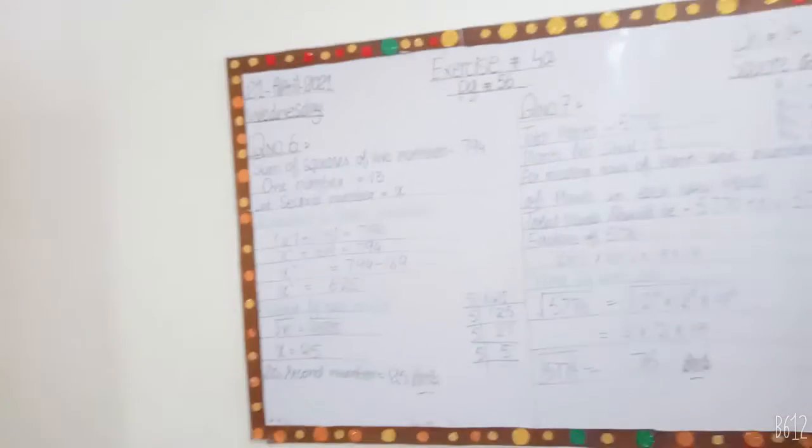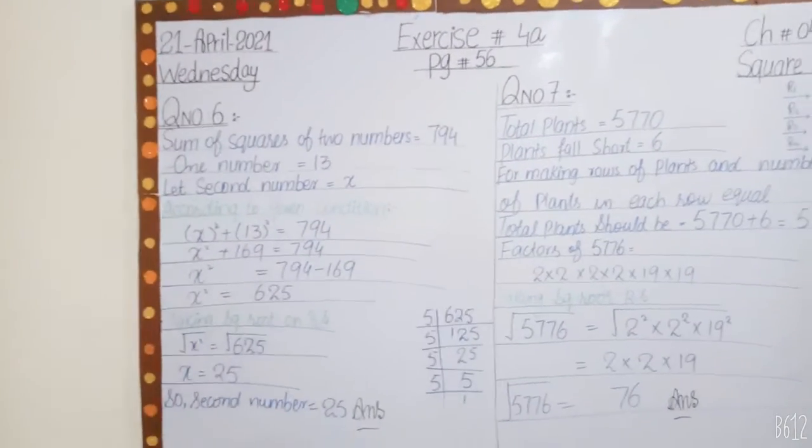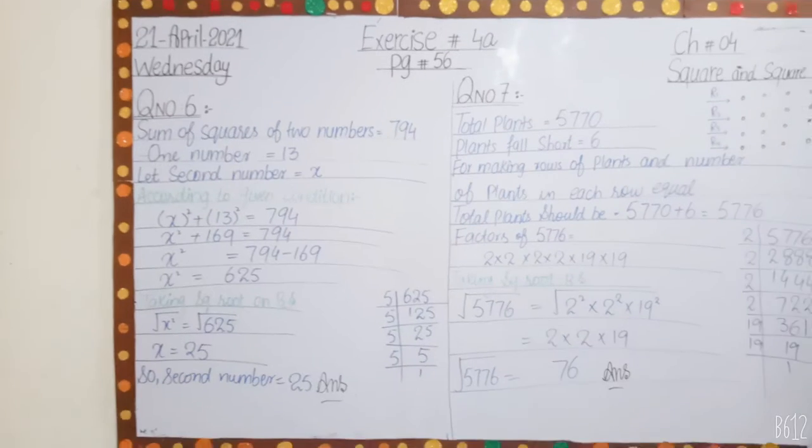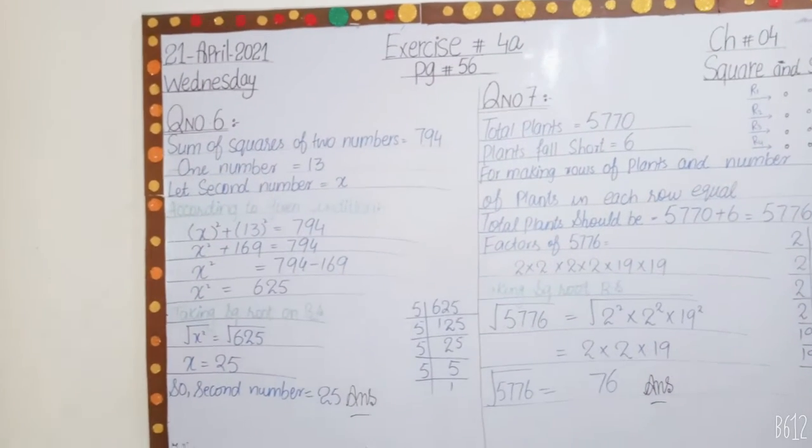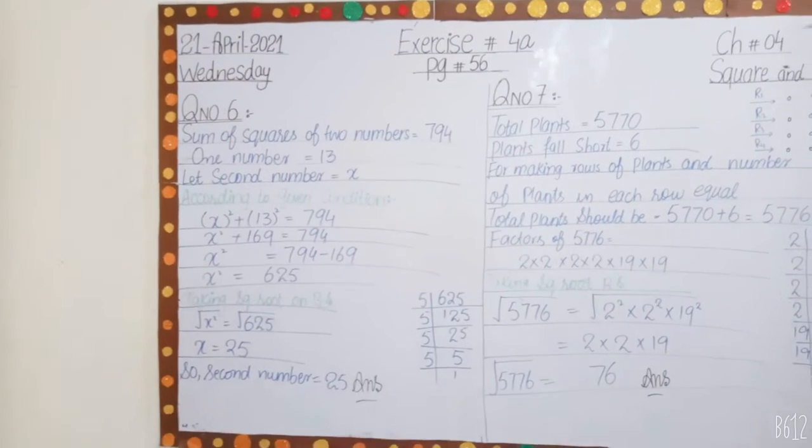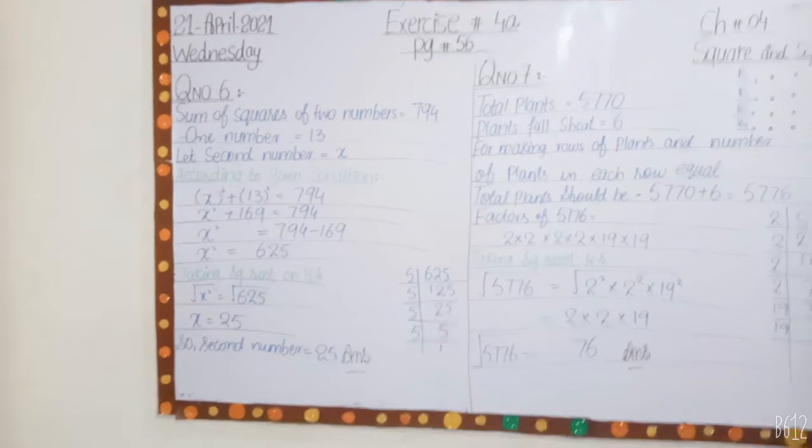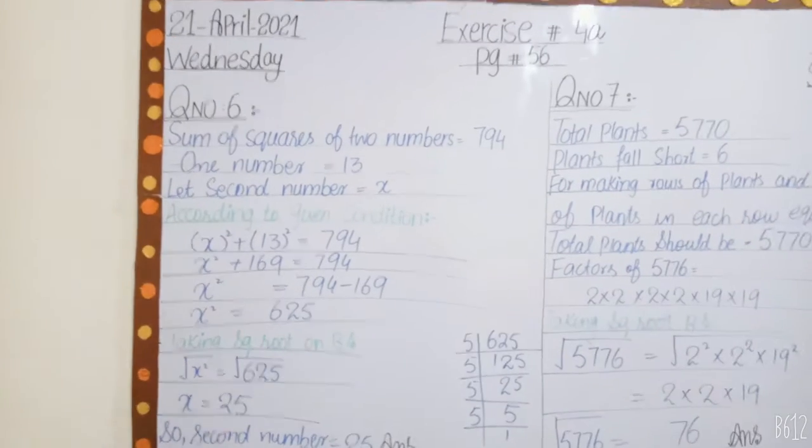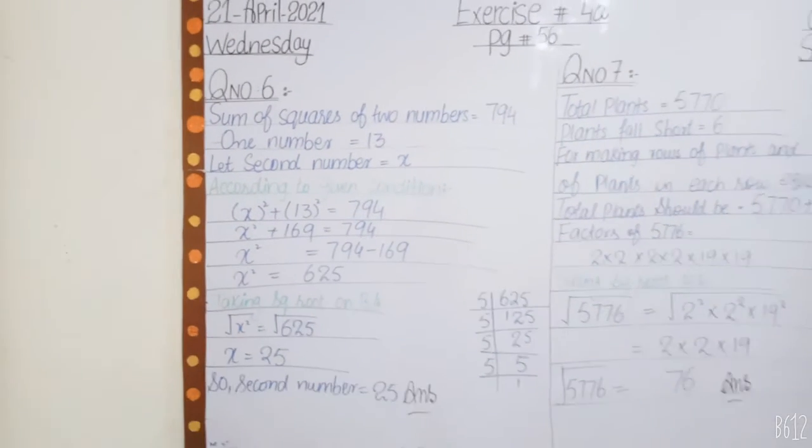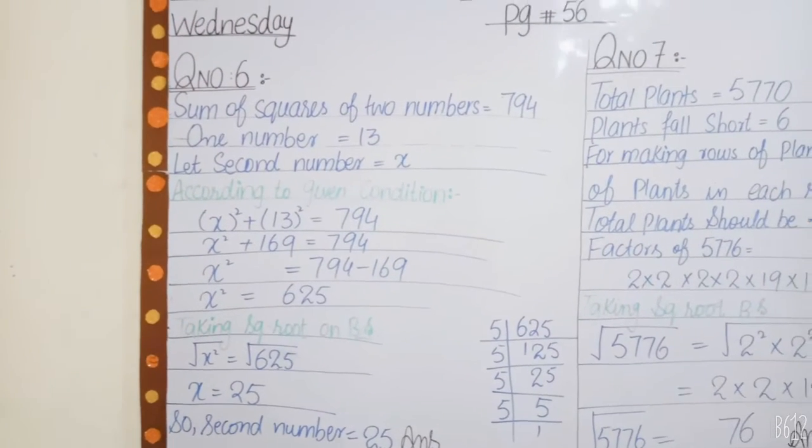We need to find numbers whose squares sum to 794. We have one number given as 13, so we need to find another number. The sum of squares of two numbers is equal to 794, and one number is equal to 13.